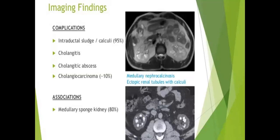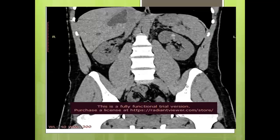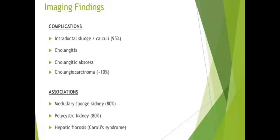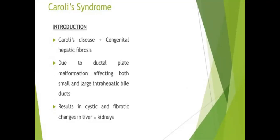Other associations include medullary sponge kidney in 80% of cases, with medullary nephrocalcinosis and ectopic renal tubules with calcification. On native CT in our case, nephrocalcinosis is visible — this is a known association with Caroli disease. Polycystic kidney disease is also associated in 80% of cases. When congenital hepatic fibrosis is present, it is called Caroli syndrome — due to ductal plate malformation affecting both small and large intrahepatic bile ducts, resulting in cystic and fibrotic changes in the liver and kidneys.